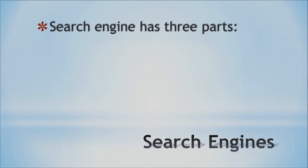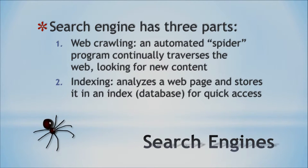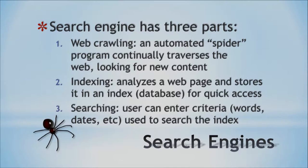There are also kind of three parts to how a search engine works. One is the web crawling part — search engines have to look over the web to find content using automated spider programs. Then they index, which means they put all this data into a big database so they can access it quickly. When you do a search, it actually looks in this database — this index — when you enter your words. So you might wonder how search engines find this stuff so fast — you type it in and they've got a billion matches — but it's just through their index. They have a database with all this content in it, though it's probably not as big as the whole World Wide Web.